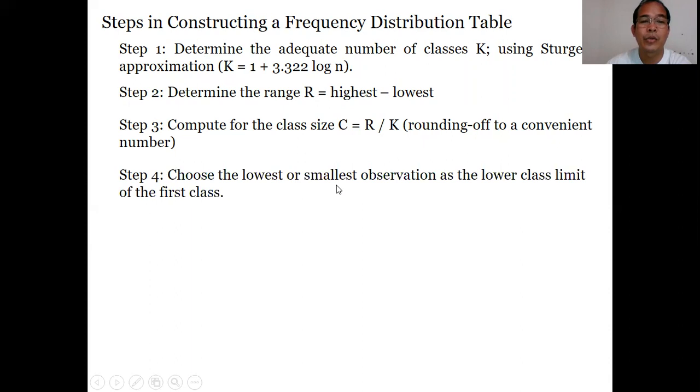The answer should be rounded to the next whole number. Step number 4: Choose the lowest or smallest observation as the lower class limit of the first class. After solving steps 1, 2, 3, and 4, that's the time you will start constructing your frequency distribution table.